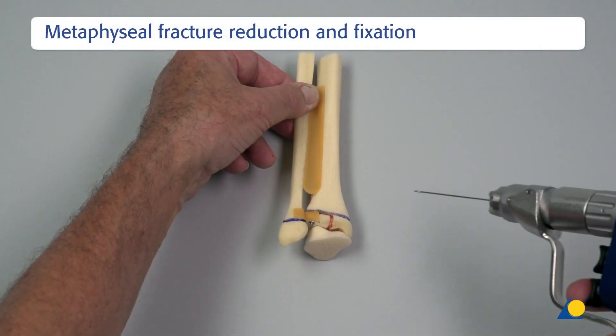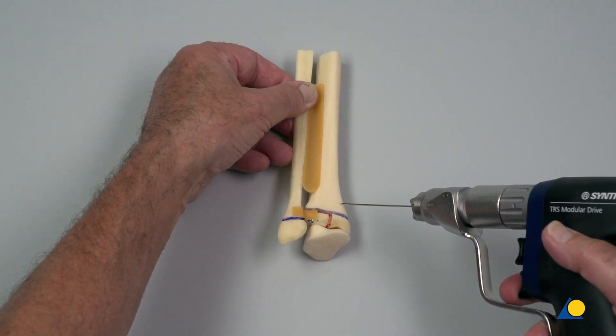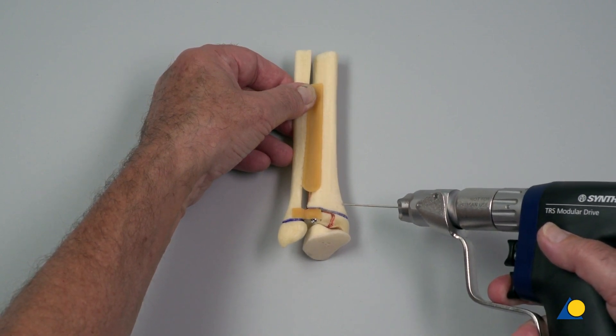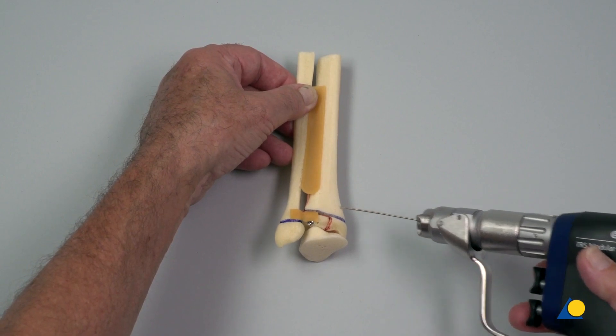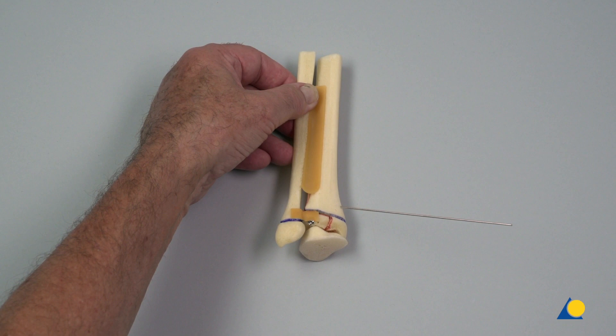Depending on the size of the lateral dorsal Volkman wedge, a second screw from anteromedial may be recommended. Normally, if the wedge is smaller than 2 cm, the distal screw is sufficient for joint fixation. Here, a second cannulated screw will be inserted from anteromedial to posterolateral.